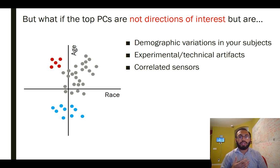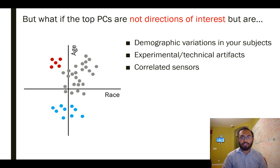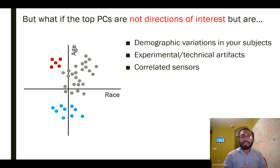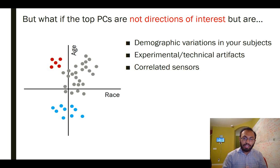Let me give an example. Suppose you're working with genetic data, and you have a bunch of breast cancer patients whose gene expression profiles you've collected. You are interested in discovering subtypes of breast cancer by doing PCA and seeing how the data clusters — maybe each cluster corresponds to one subtype. What you might find is that the top PCs don't correspond to subtypes of breast cancer, but instead correspond to demographic variations such as race, age, or gender, because those are responsible for most of the variation in your data. In other cases, experimental or technical artifacts can cause tremendous variation and cause the top PCs to reflect that instead of the signal of interest.